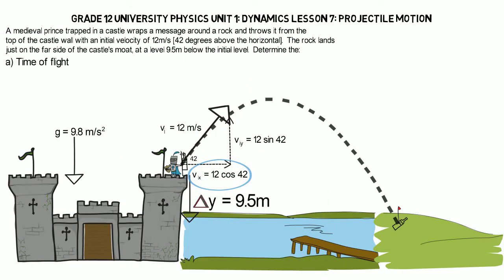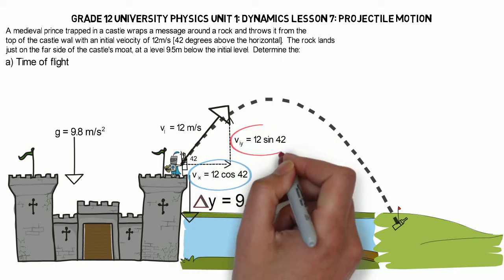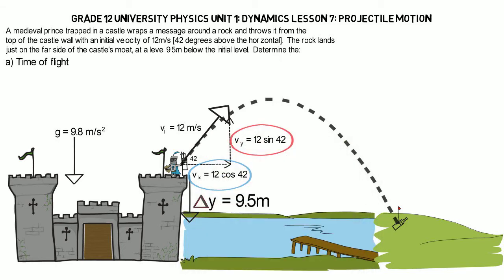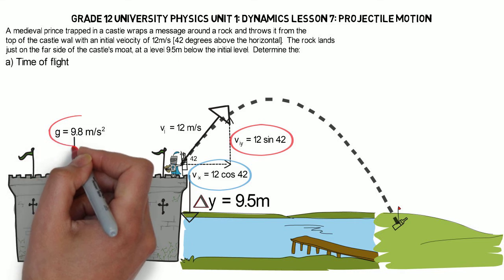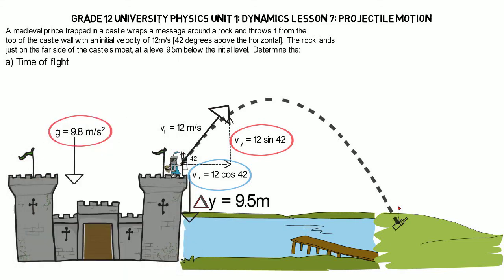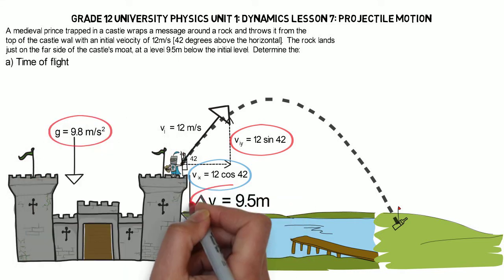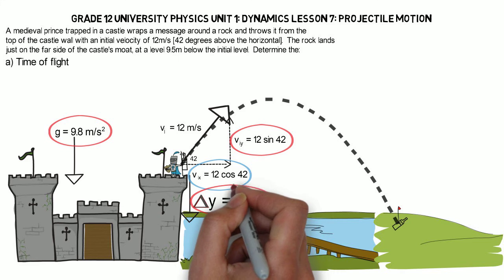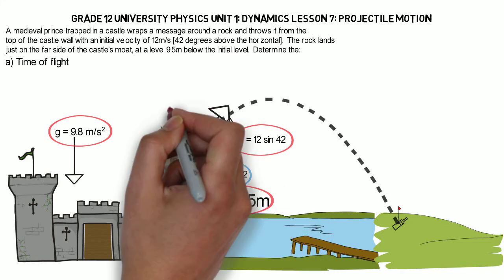Now to figure out time of flight, if we were to look at our X component, we couldn't solve it because the only thing we know in X is our initial velocity in X. We don't know time and we don't know range or displacement in X. But in our Y component, we have three pieces of information, and that's all we need. We have our displacement in Y, our initial velocity in Y, and our acceleration in Y.